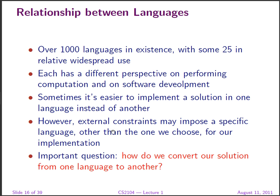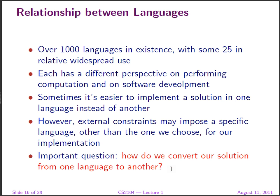One important question for understanding the relationship between languages is: how do we convert a solution from one language to another? We want to do that in a systematic manner. In this module we will take programs in C and convert them into another language such as Scheme, doing so systematically so that any C program can be translated into its corresponding Scheme counterpart. We want to develop systematic translation schemes.